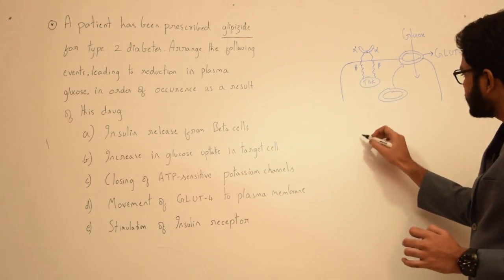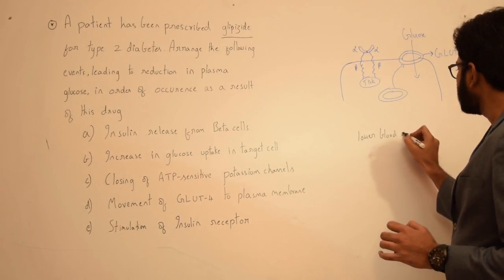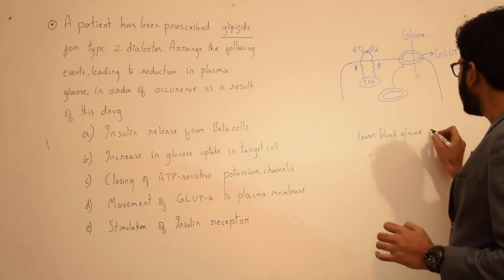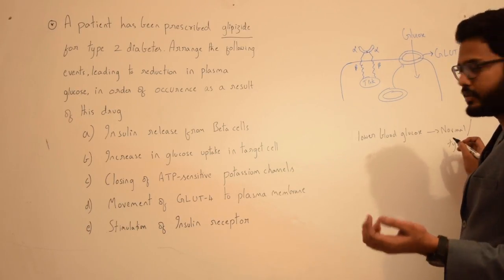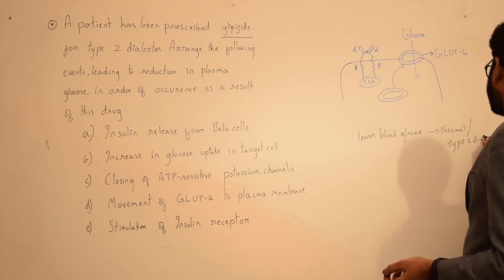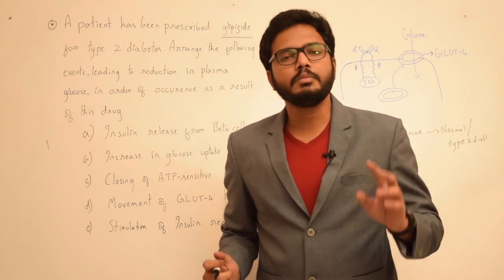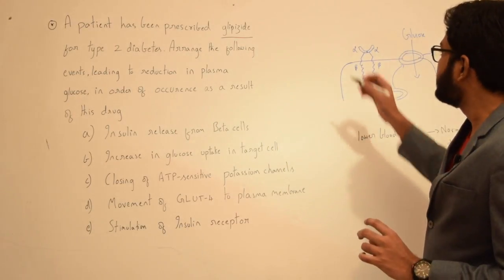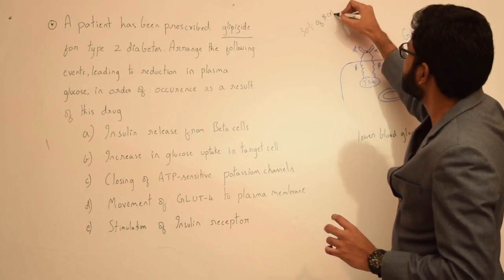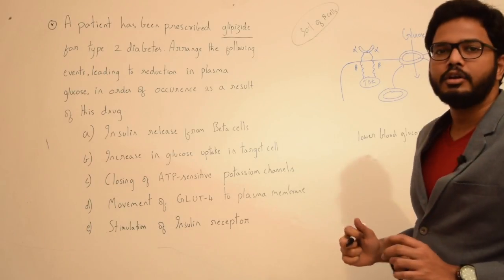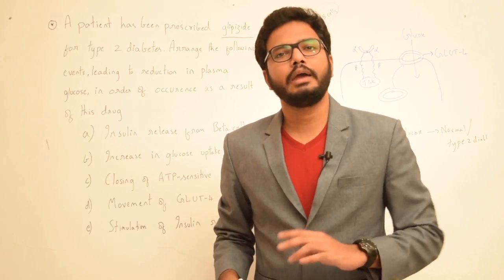Sulfonylureas lower blood glucose levels in normal patients as well as in patients suffering from type 2 diabetes, but not in type 1 diabetes, because for these drugs to act there has to be a minimum of 30% functional beta cells in the pancreas. These drugs act only in type 2 diabetics and in normal patients, but not in type 1 diabetic patients.